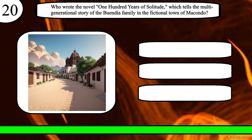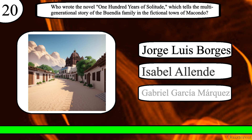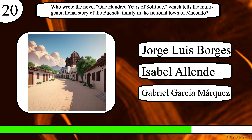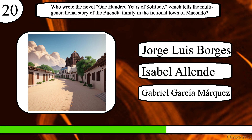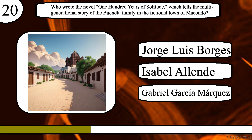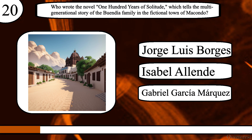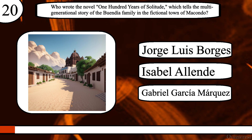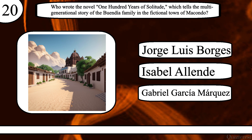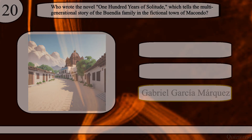Question 20. Who wrote the novel 100 Years of Solitude, which tells the multi-generational story of the Buendía family in the fictional town of Macondo? Jorge Luis Borges, Isabel Allende, or Gabriel García Márquez? The correct answer is Gabriel García Márquez.